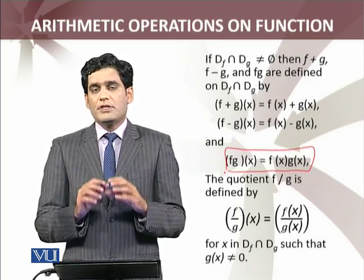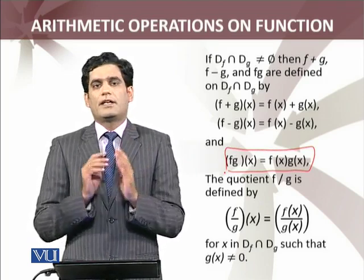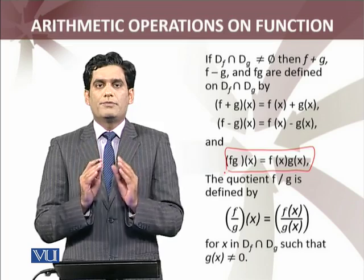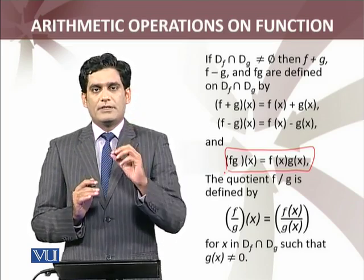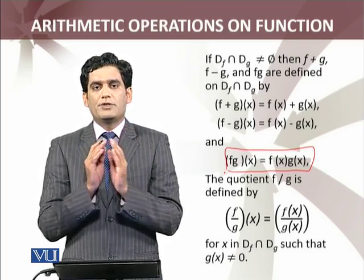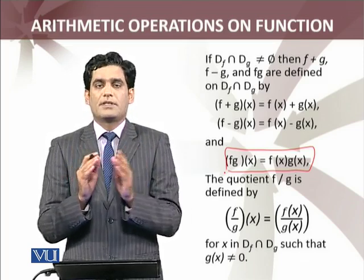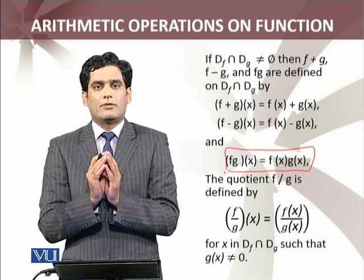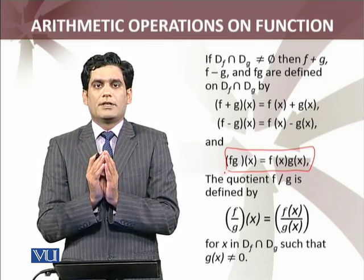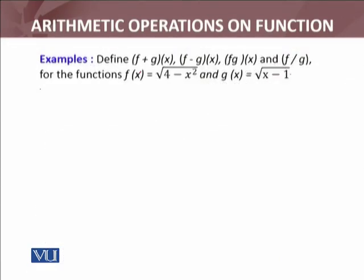Quotient کے لیے ایک condition ہے کہ division by zero allow نہیں کرتے۔ So g of x must be non-zero. اگر f divided by g کو define کرنے جا رہے ہیں تو domain میں intersection میں سے بھی ایسے points لیں گے جہاں g of x zero نہ ہو، کیونکہ zero سے division allow نہیں کرتے mathematics میں۔